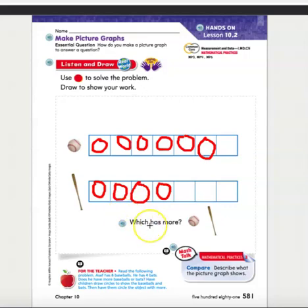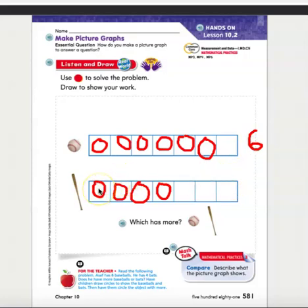It says here which has more. So let's count. How many baseballs do I have here? One, two, three, four, five, six — six baseballs. And how many do I have for baseball bats? One, two, three, four — I only have four baseball bats. So you can see here that there are more baseballs than baseball bats.